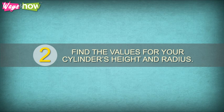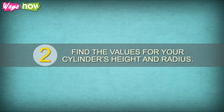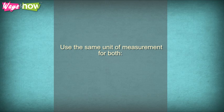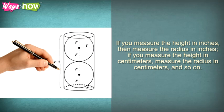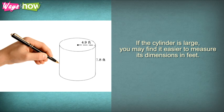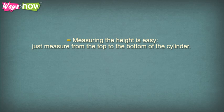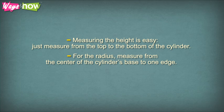Find the values for your cylinder's height and radius. Use the same unit of measurement for both. If you measure the height in inches, then measure the radius in inches. If you measure the height in centimeters, measure the radius in centimeters, and so on. If the cylinder is large, you may find it easier to measure its dimensions in feet. Measuring the height is easy. Just measure from the top to the bottom of the cylinder. For the radius, measure from the center of the cylinder's base to one edge.